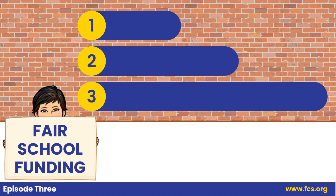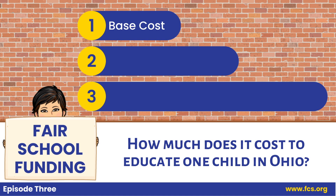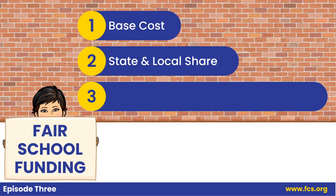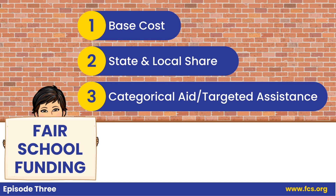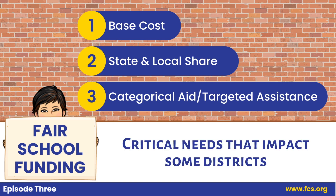This plan has three components. Number one is base cost — the plan establishes a base cost of educating a typical child in Ohio. Number two is state and local share — the responsibility of funding the base cost should be shared between the state and local district, with the local share based upon the ability of a school district's community to generate revenue based on its income, property value, and enrollment. And number three is categorical aid — targeted assistance for critical needs that impact some districts.